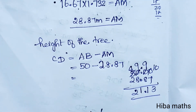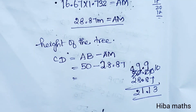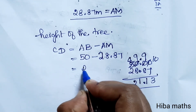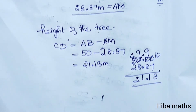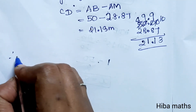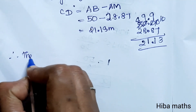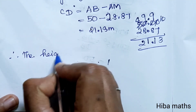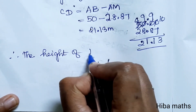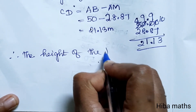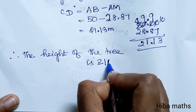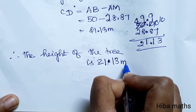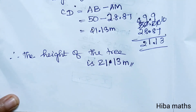Answer: 21.13 meters. Therefore, the height of the tree is 21.13 meters. I hope that was easy to understand. Thank you so much for watching.